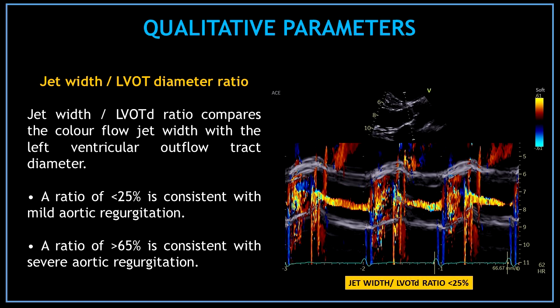The next qualitative parameter for the assessment of aortic regurgitation is the jet width to LVOT diameter ratio. The jet width LVOT diameter ratio compares the color flow jet width with the left ventricular outflow tract diameter. A ratio of less than 25% is consistent with mild aortic regurgitation, and a ratio of more than 65% is consistent with severe aortic regurgitation.